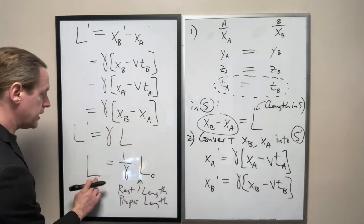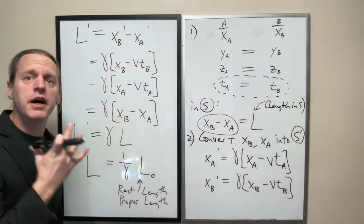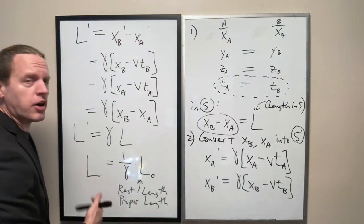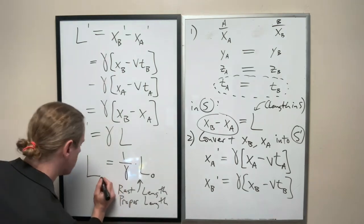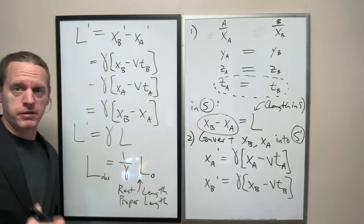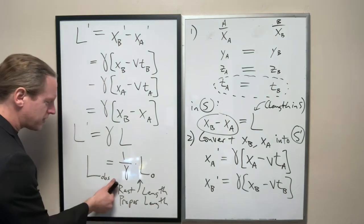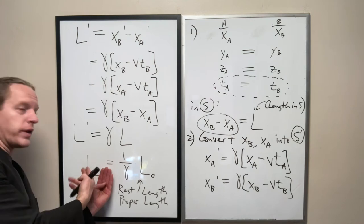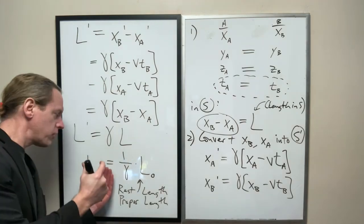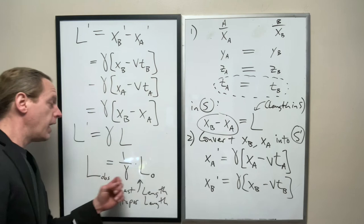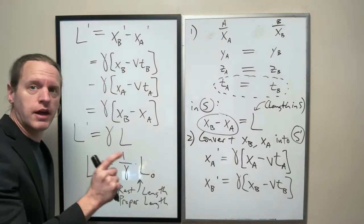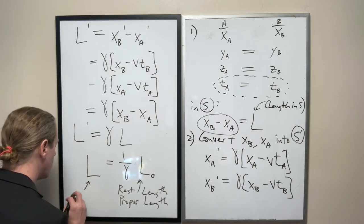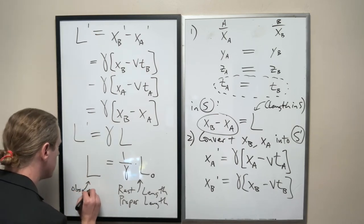And then the standard way of writing the observed length by any other observer who's seeing that rod, seeing the meter stick moving, we typically just call it L. Or if you want, you occasionally see it as L observer like that. Now I'm going to stick with this notation here without that, because really this L without anything is the measured length in any frame where we're seeing it moving. And this is always going to be the measured length when it's at rest. This is the observed length.